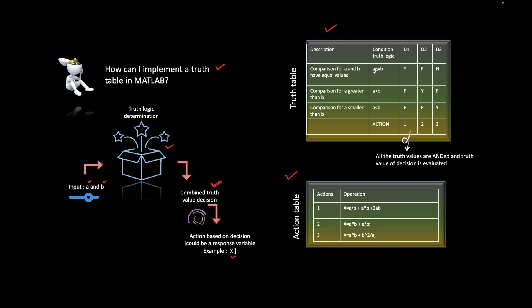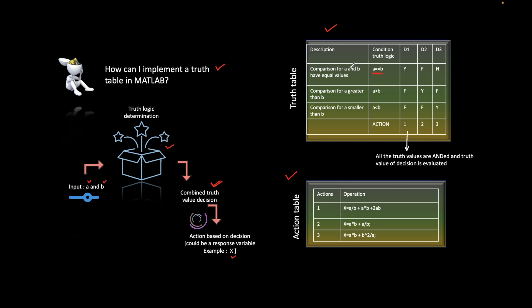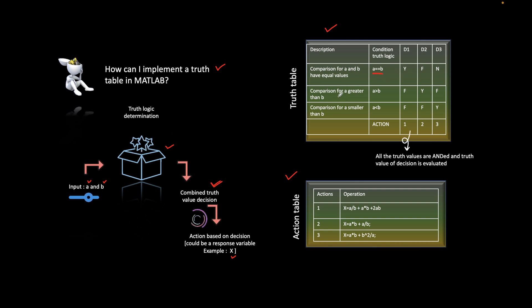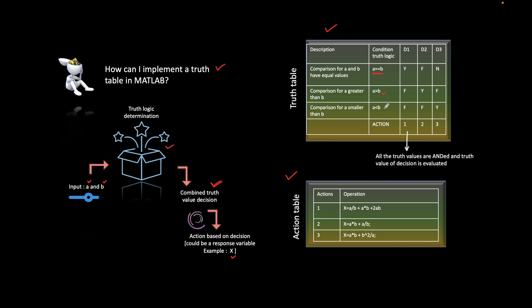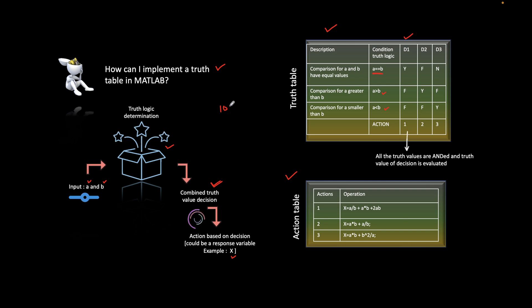This is the truth table and correspondingly we have an action table. We consider three conditions: first, a == b, meaning if a and b have the same values; second, a > b; and third, b > a. So we have three decisions based on these three situations.